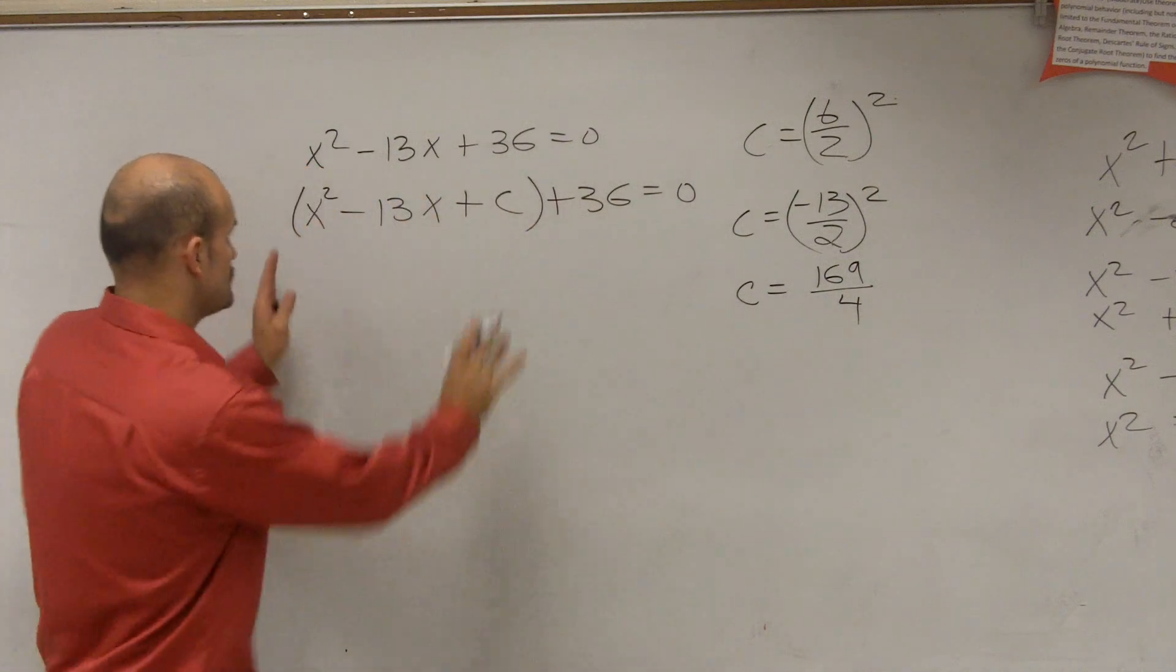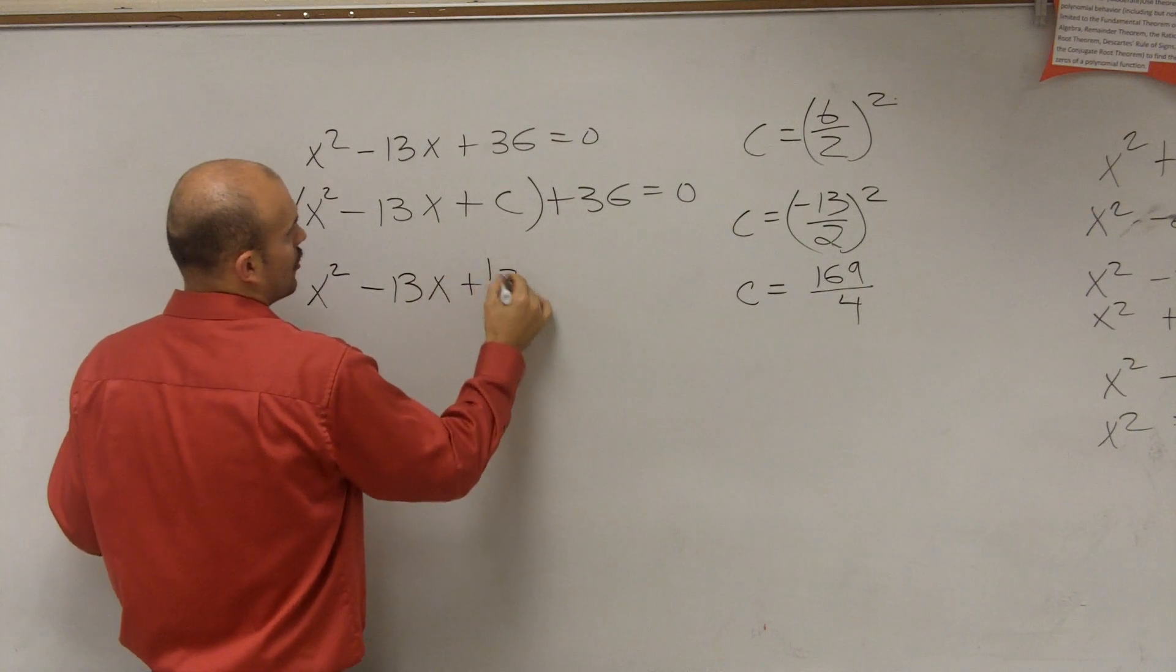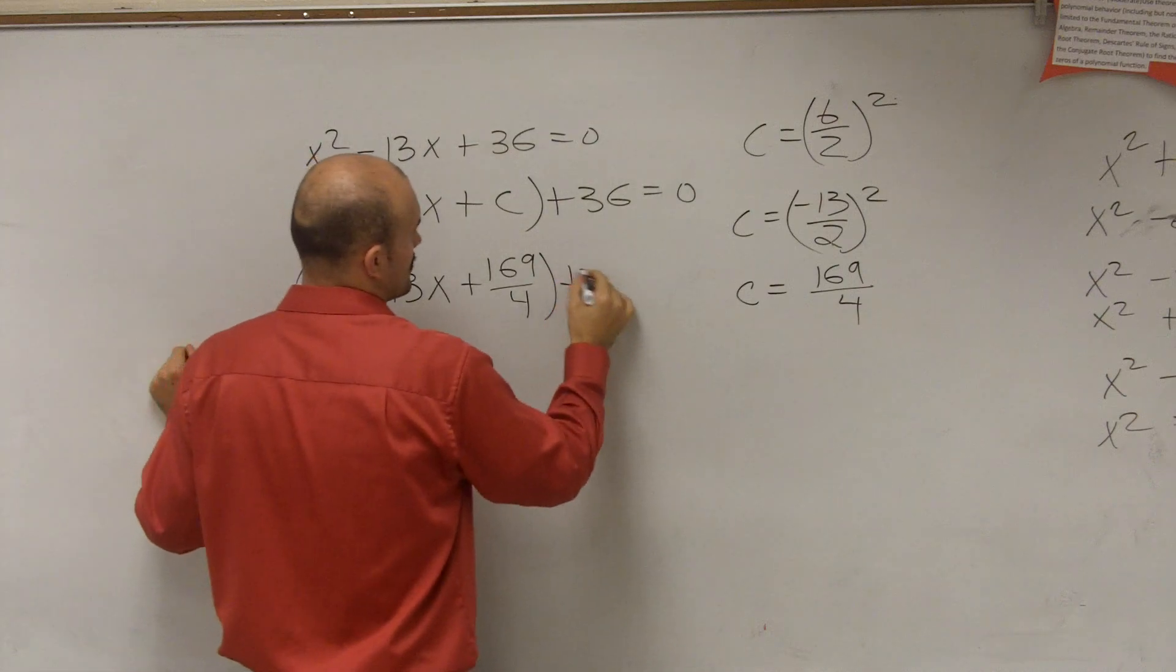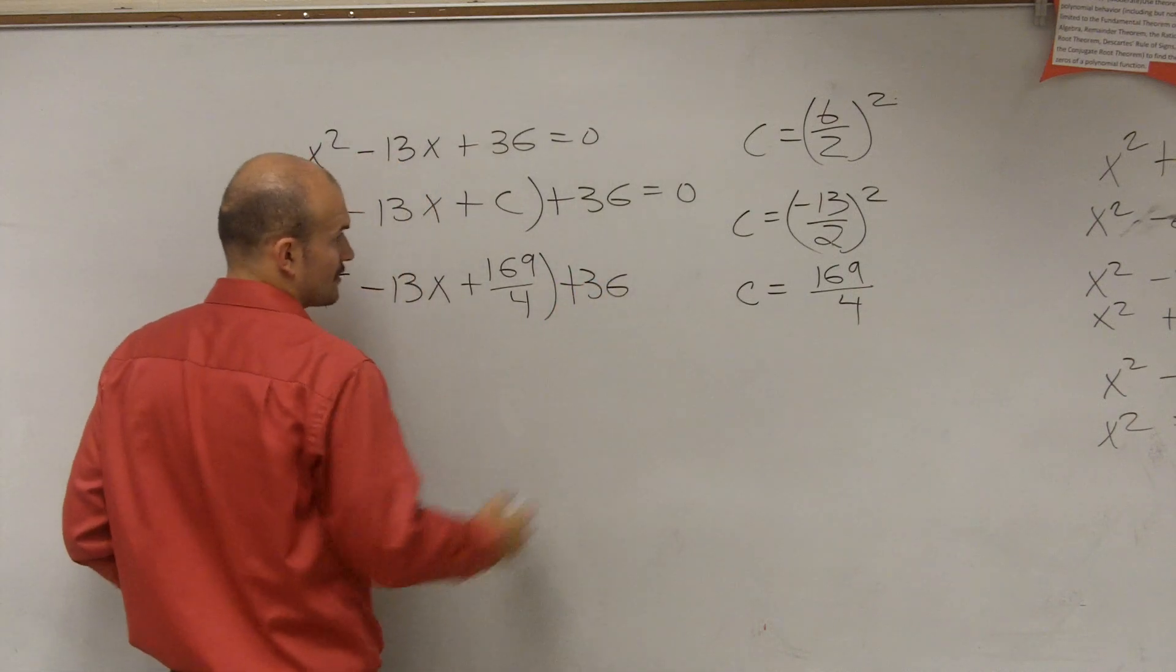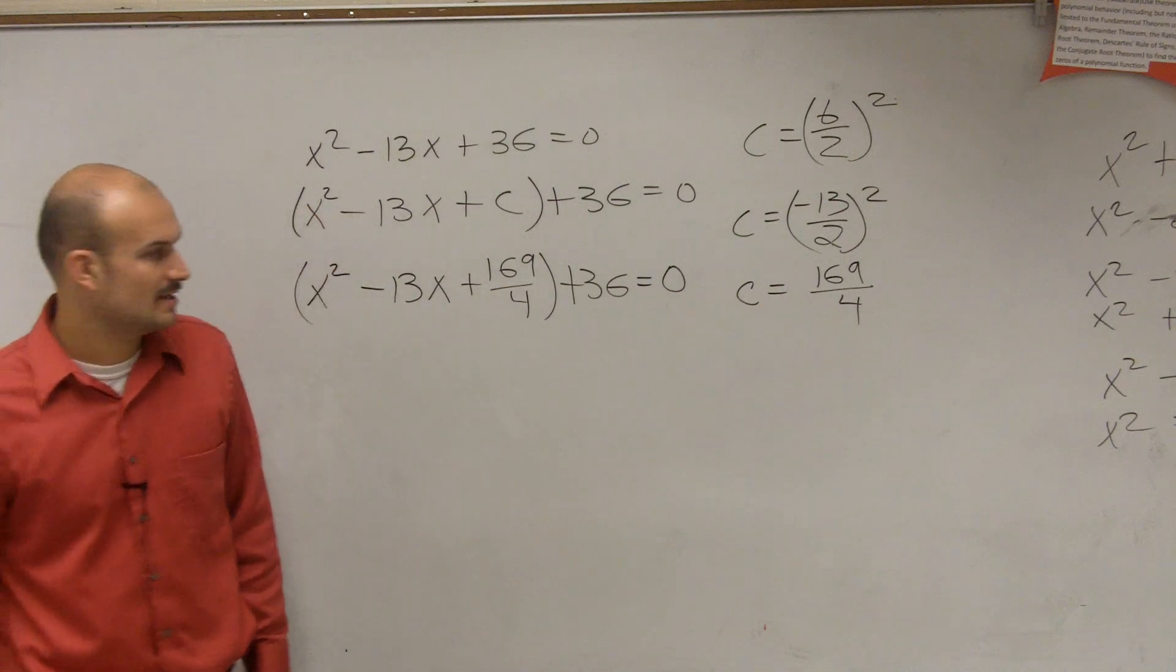So therefore, I write x squared minus 13x plus 169 over 4 plus 36 equals 0. Now, here's the important thing, ladies and gentlemen.